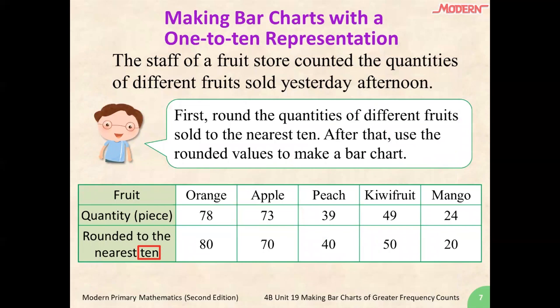First, let's take a look at the number of oranges. Since we are rounding to the tens place, we will be looking at the units place. The number is 8, which is larger than 5, so we have to round up and add 1 to the 7. Next is apple. The units place is a 3, which is between 1 to 4, so this time we have to round down and the tens place remains unchanged. For peach, the units place is a 9, which is larger than 5, so we have to round up.